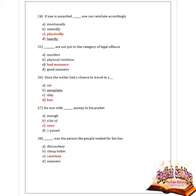Next question: once the writer had the chance to travel in what? Given options are car, aeroplane, ship, or bus. Option D is correct — bus. Once the writer had a chance to travel in a bus.